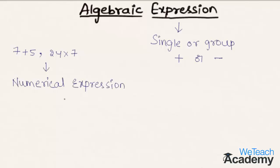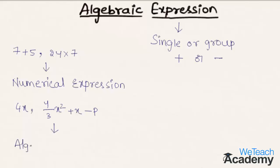Let us consider another example. We have two expressions: 4x, and the second expression is 4 by 3 x square plus x minus p. The expression containing at least one algebraic term, that is variable terms, we call this expression an algebraic expression.